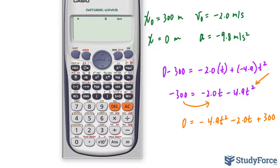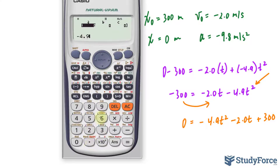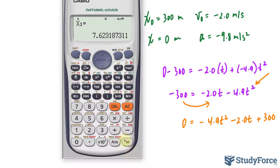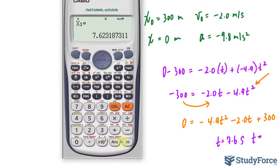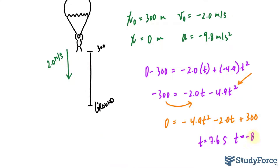Rather than using the quadratic formula, I'll use a function already installed on my calculator. I'll enter negative 4.9, negative 2.0, and 300. I end up with two values of t: one being 7.62 seconds. The other, because it is a quadratic and you should get up to two solutions, is negative 8.03. We can't have negative time, so we won't be using that. Therefore, the time it takes the canister to reach the ground is 7.6 seconds.